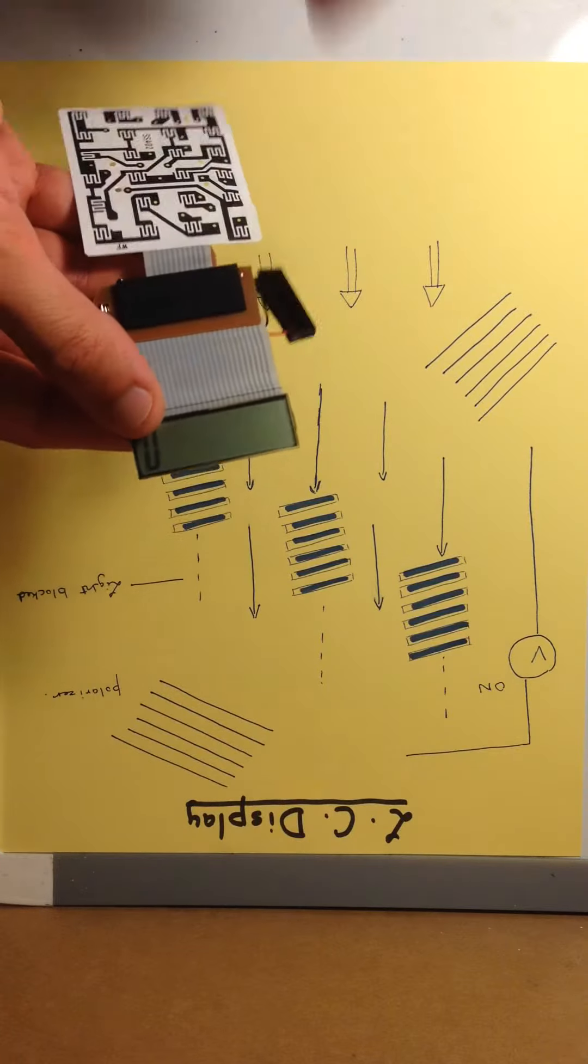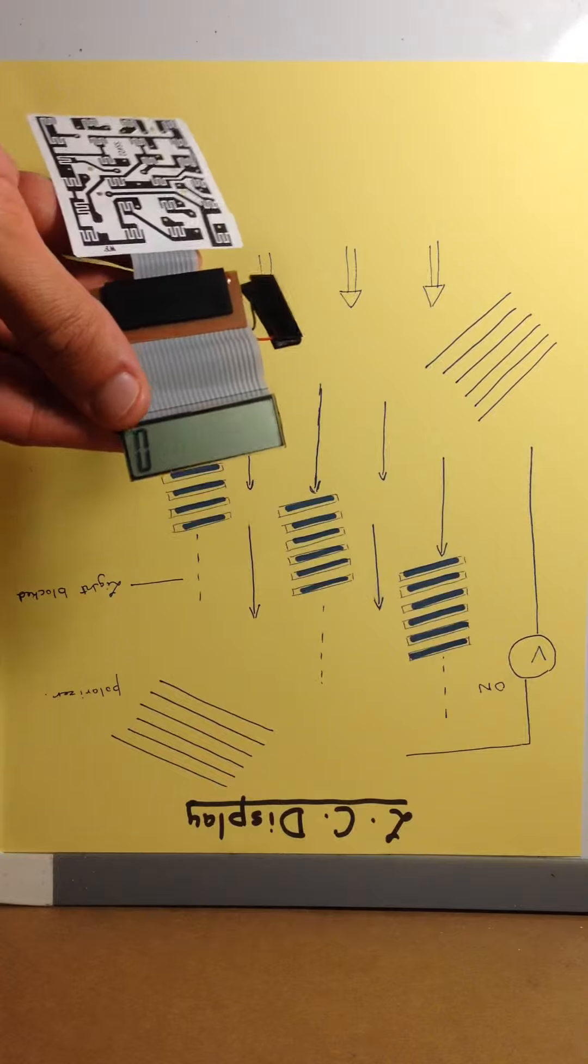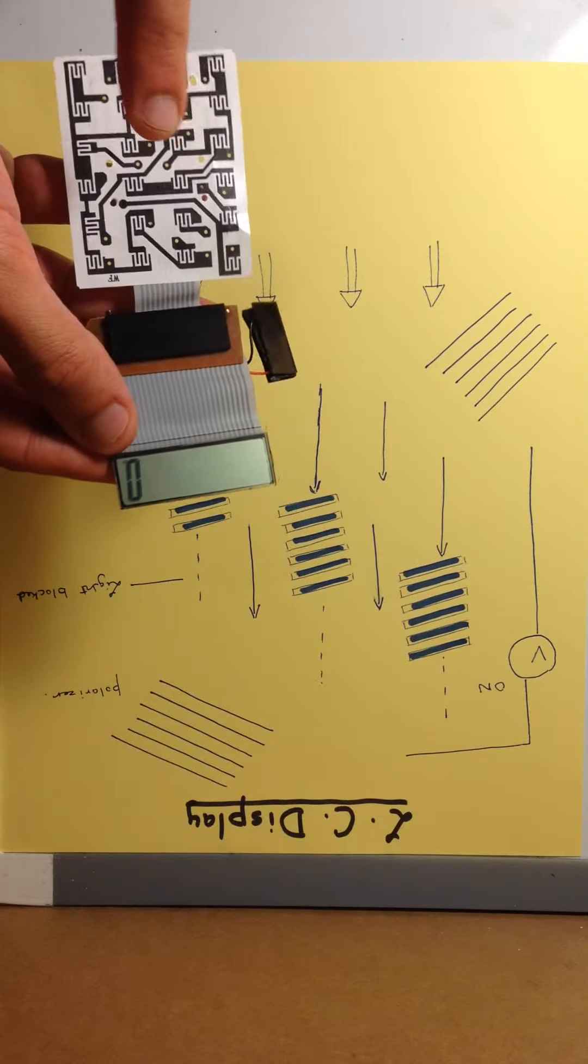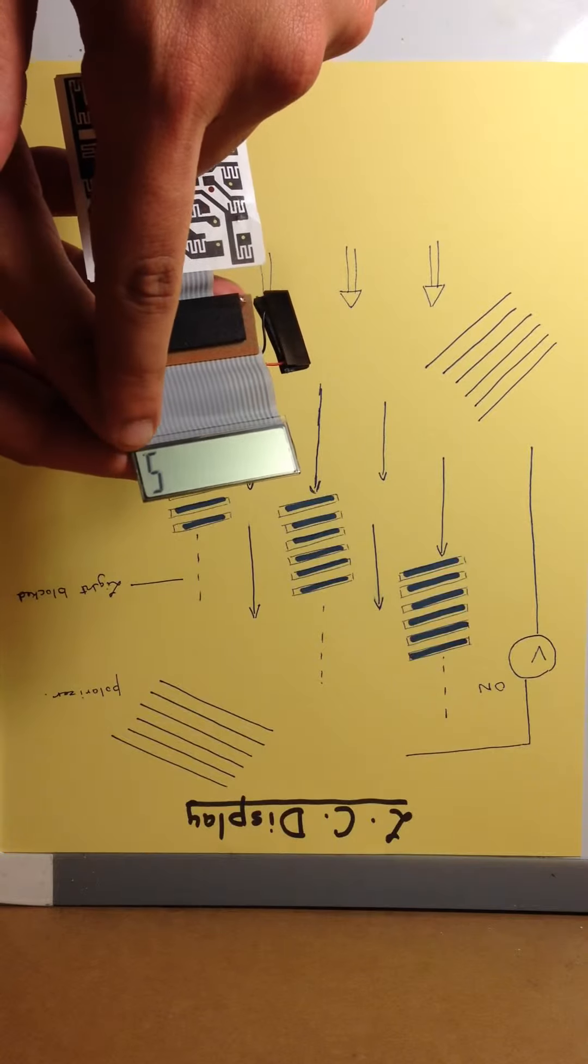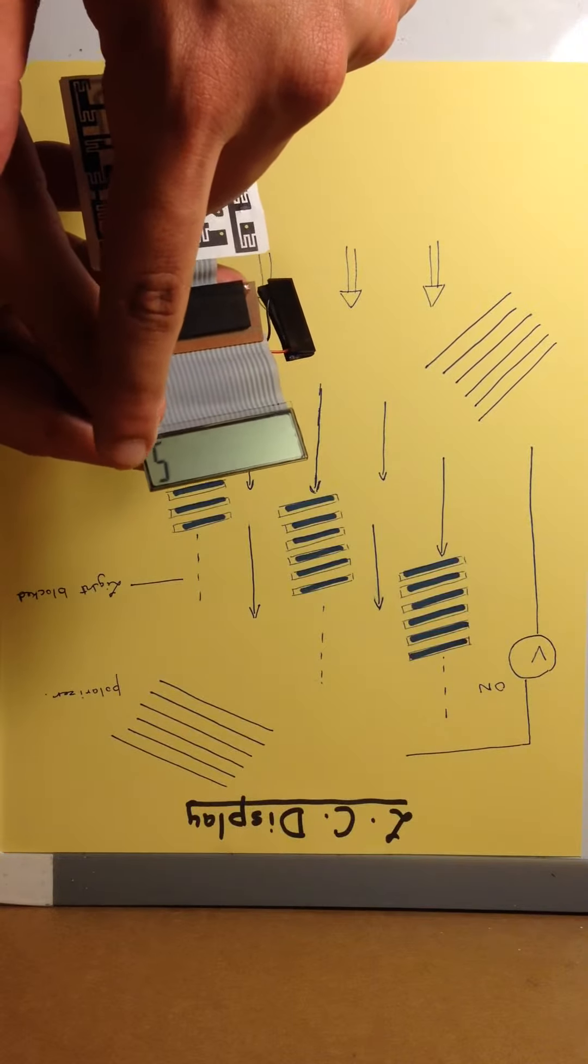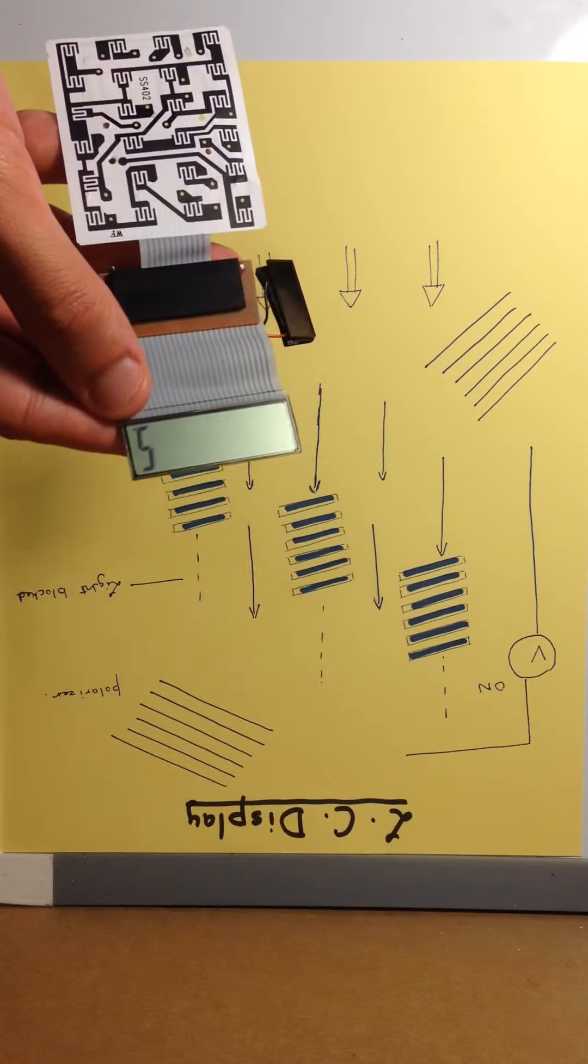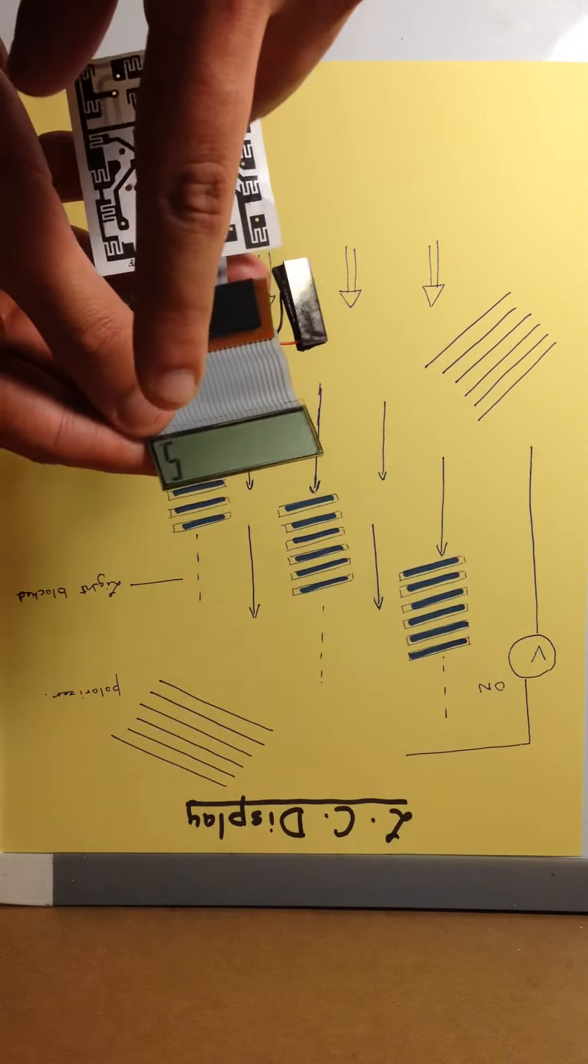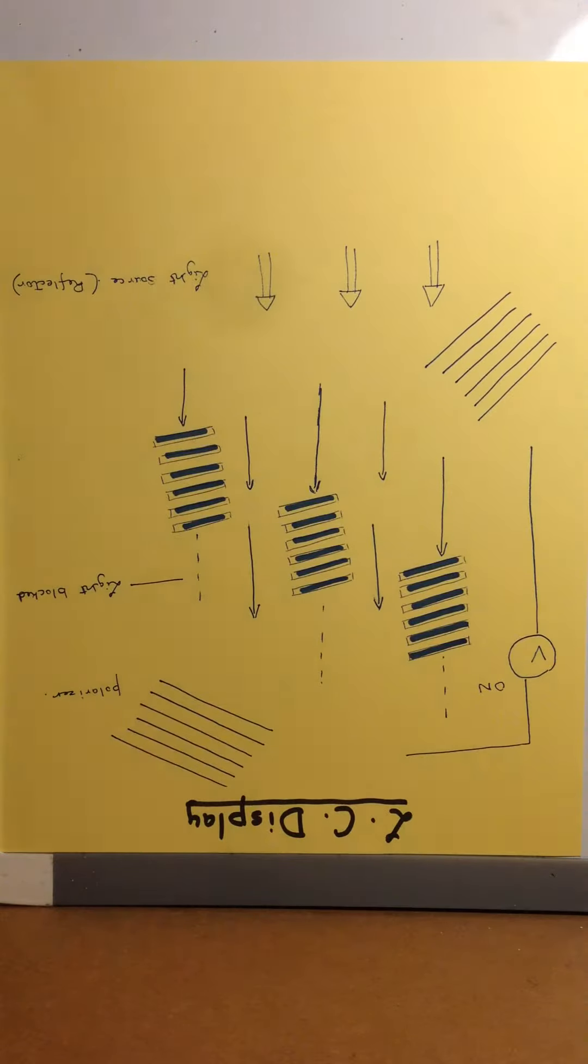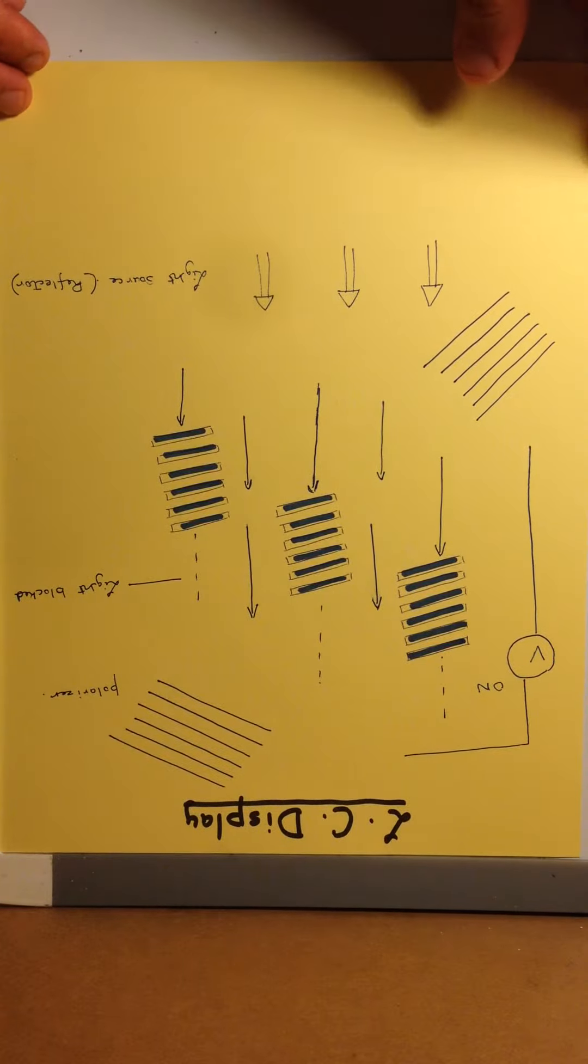So if you can see over here, the digits on this calculator—what we see is the light which is actually blocked. As a result, we can see a five over here, which is actually light blocked by the liquid crystals. Now let's see a very interesting example.